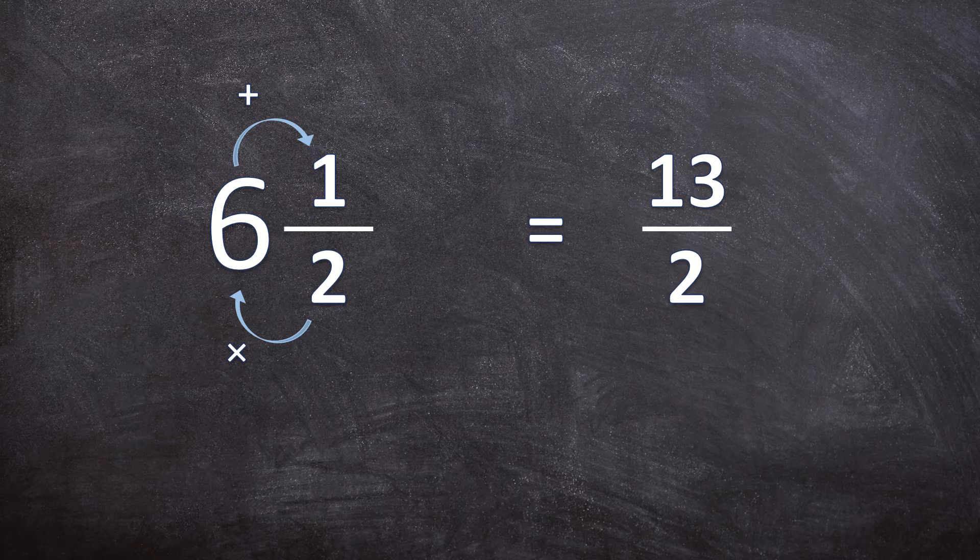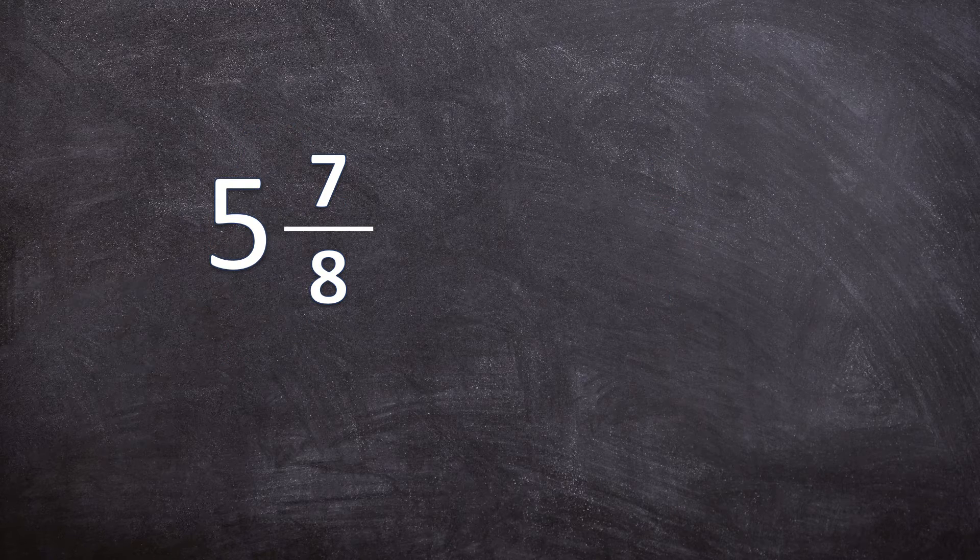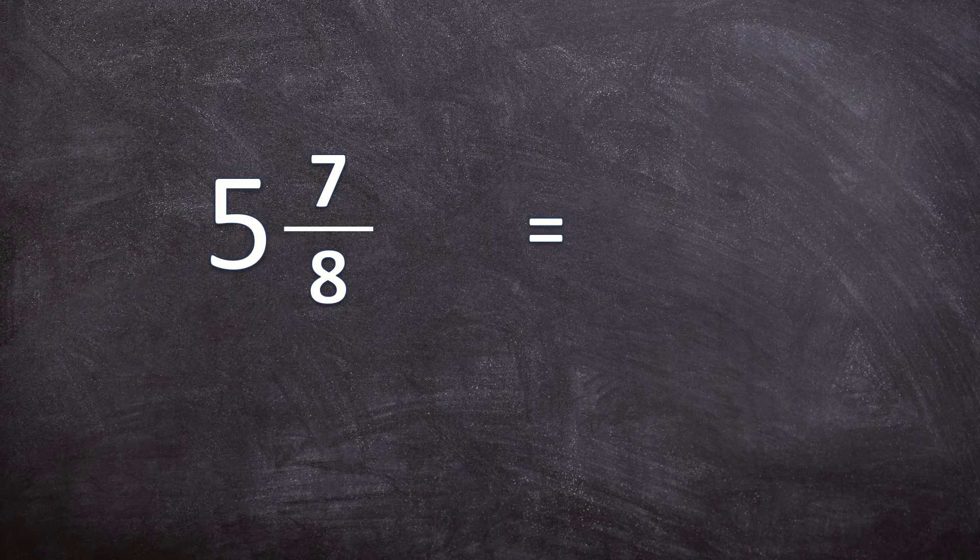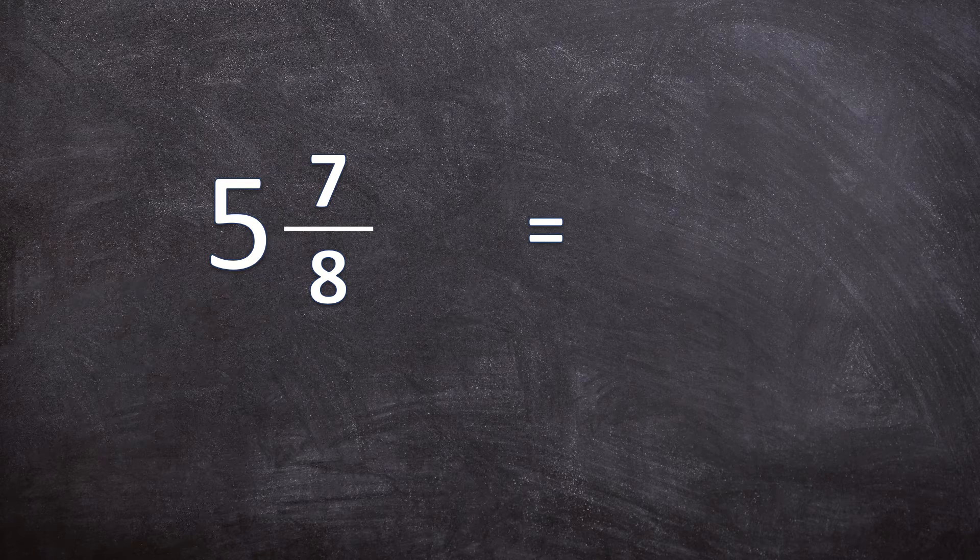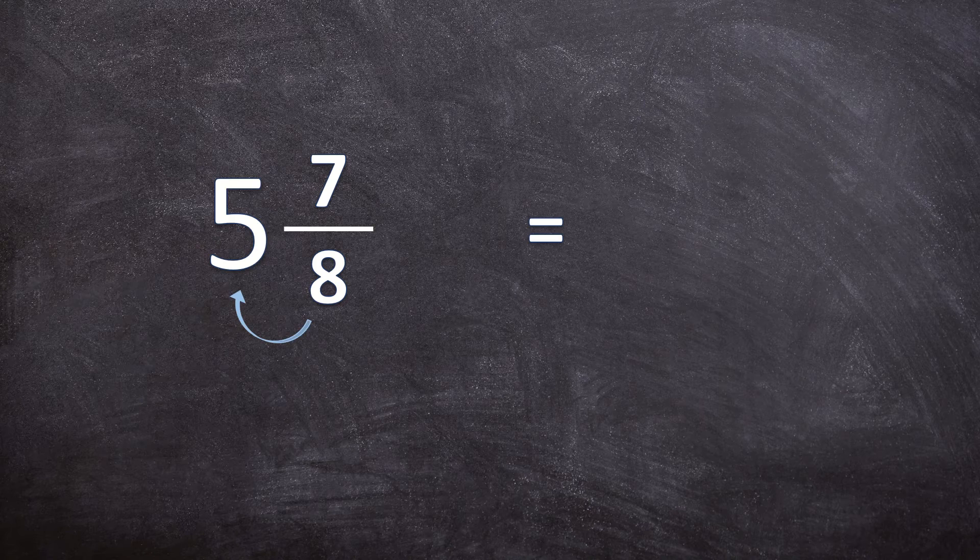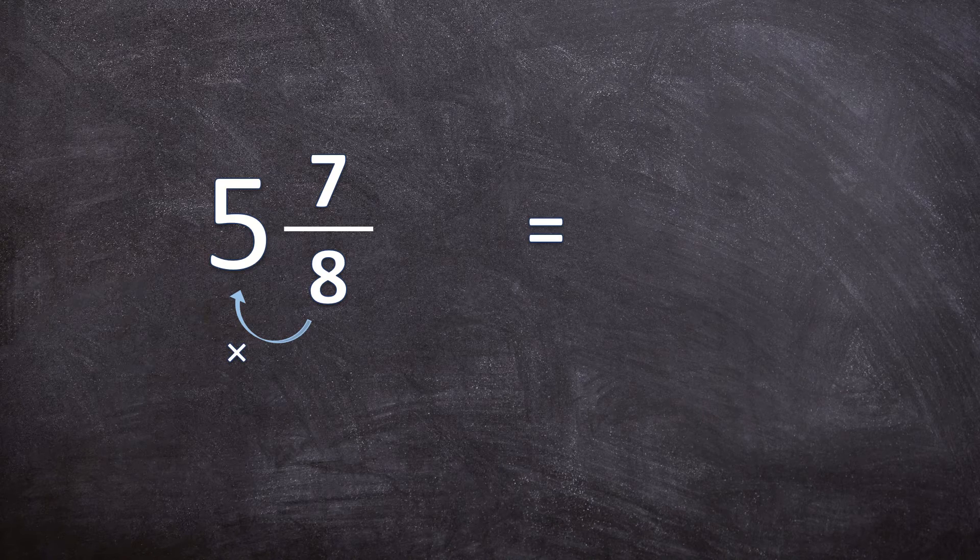Let's have one more example. Here we have five and seven eighths and we want to convert this mixed number to an improper fraction. So the first thing we do is we multiply the denominator with the whole number. Eight times five is 40.